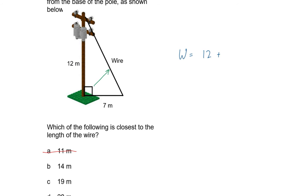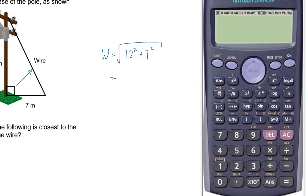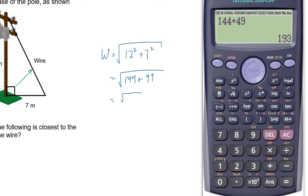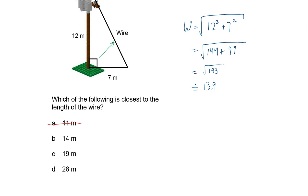Since we're finding the longest side, we add the other two sides. We square everything and take the square root, so I'll do that on my calculator. 12 squared is 144, 7 squared is 49. 144 plus 49 is 193. The square root of 193 is 13.89, or about 13.9. The question asks which is closest, so that would be 14.